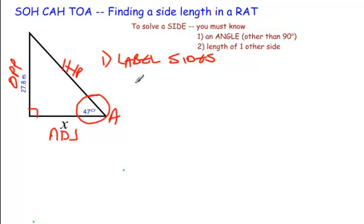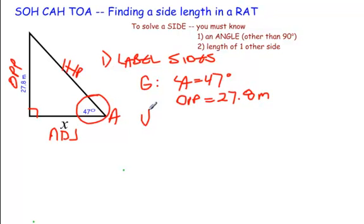Now in order to know which trig ratio you're going to use, whether it's SOH the sine ratio, or the cosine ratio, or the tan ratio, you first have to examine what you're given. In this case we're given angle A, and that's 47 degrees. We're also given a side, and that's the opposite side. The opposite side is 27.8 meters.